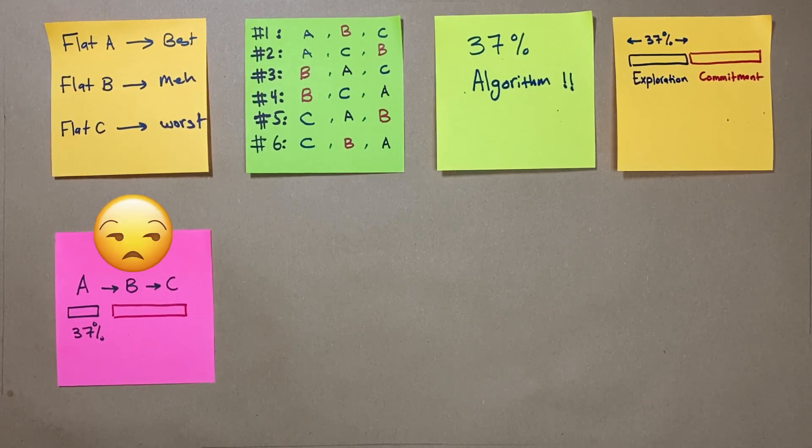Let me explain that. So he examines flat B, and since it's worse than A, the best option from the exploration phase, he didn't accept it, hoping that the third option, flat C, is better than A. But unfortunately, it's even worse, which makes Ted have no option but to pick flat C.